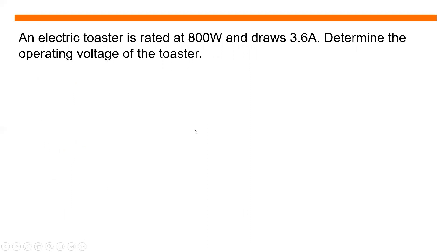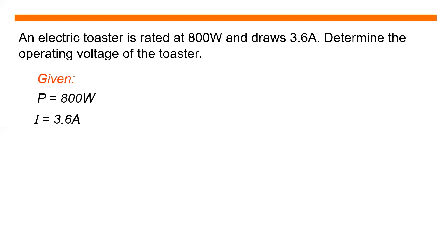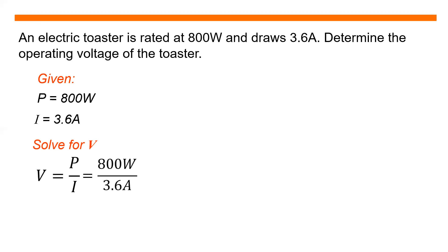Another problem: an electric toaster is rated at 800 watts and draws 3.6 amperes. Determine the operating voltage of the toaster. Given: power equals 800 watts, current equals 3.6 amperes. Solving for voltage: V equals P divided by I, that is 800 watts divided by 3.6 amperes, and we will get 222.22 volts.